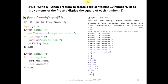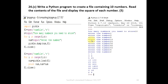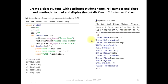Another example: we will use the student details. We will call the student class. In this class, class Student — create a class Student with attributes student name, roll number, place. The method is to read and display the details. Create two instances of the class.